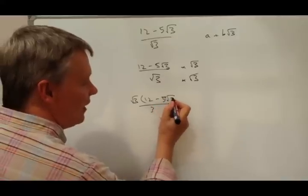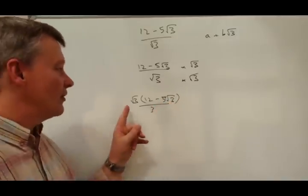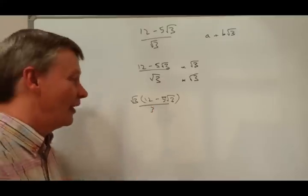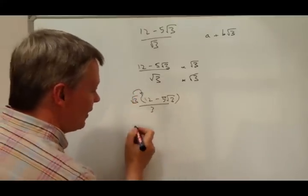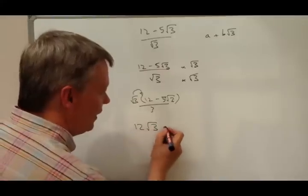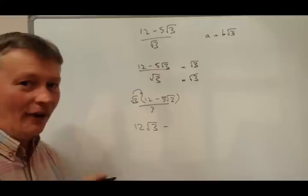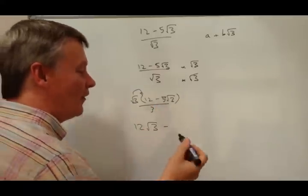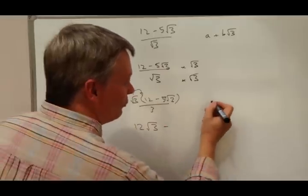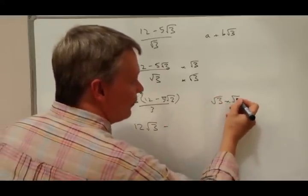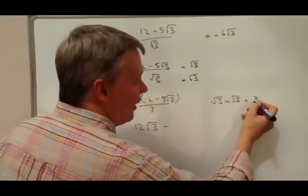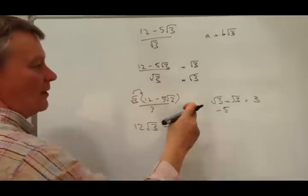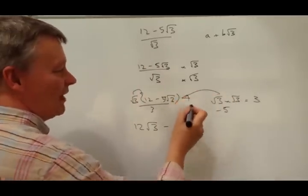I've got root 3 multiplied by 12 minus 5 root 3. So root 3 times 12 is 12 root 3. Now this is where it's really tricky: you've got root 3 multiplied by minus 5 root 3. Well, root 3 times root 3 equals 3, and then you've got times minus 5, so it's actually minus 5 times 3, which is minus 15.